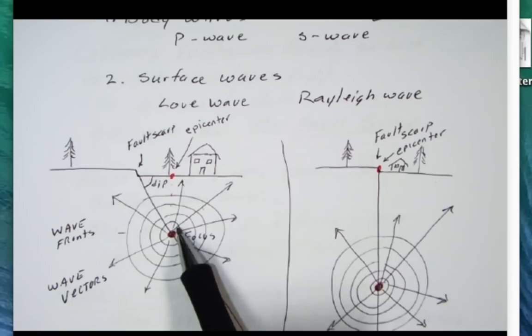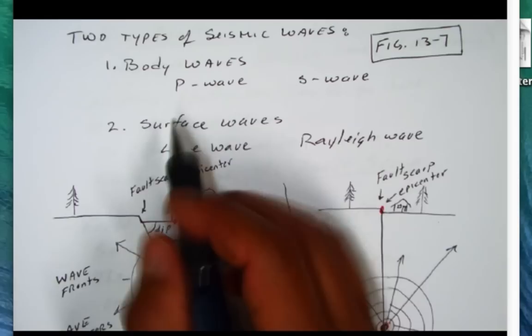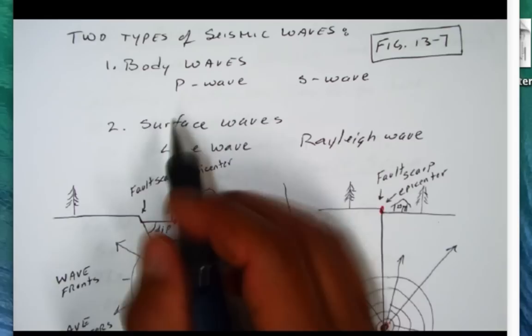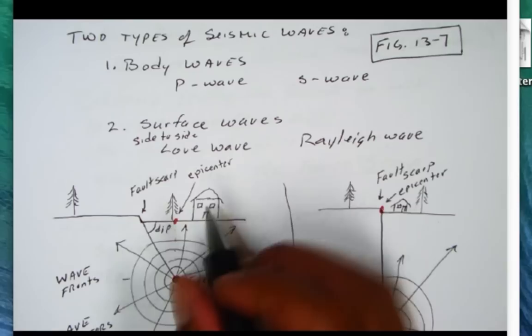Those will not form until the body waves that form down here, the P and S waves, reach the surface. The Love wave is more of a side-to-side shaking, and more of a horizontal shaking.